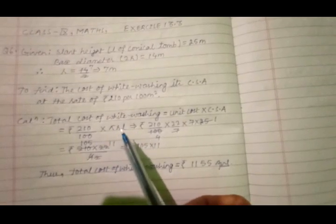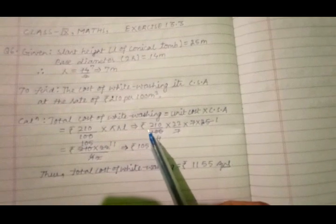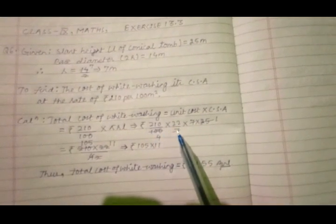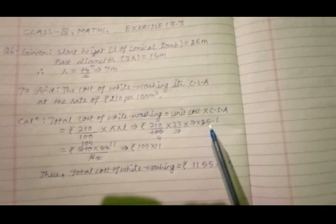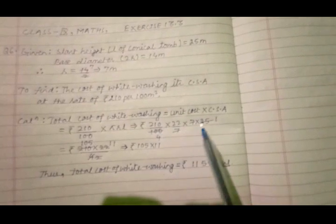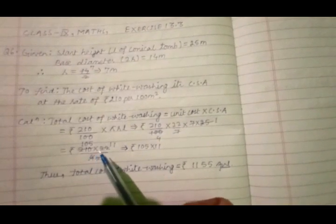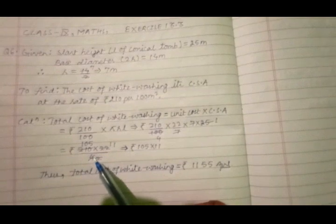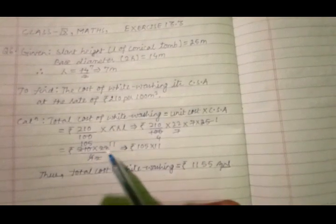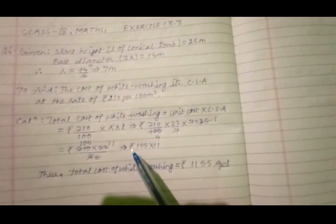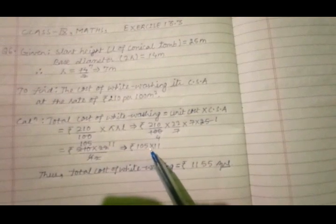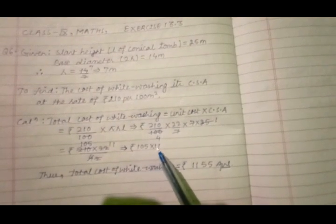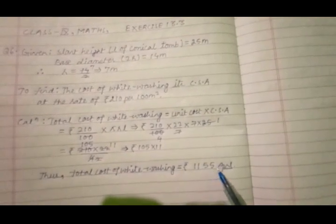On using all respective values it becomes rupees 210 upon 100 into 22 upon 7 into 7 into 25. This on further simplification becomes 210 into 22 upon 4. And on simplifying it again it becomes rupees 105 into 11 and their product is rupees 1155.